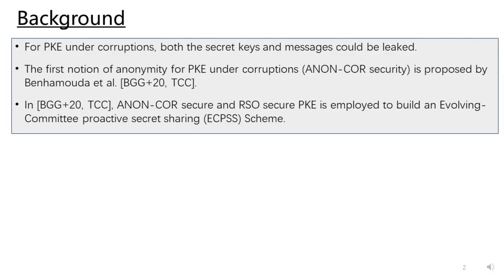Let me introduce some background information. For public key encryption under corruptions, both the secret keys and messages could be leaked. As far as we know, the first notion of anonymity for PKE under corruptions is proposed by Behemulda et al. in 2020. In their work, anonymous CLR-secure and RSO-secure PKE is employed to build an evolving community proactive secret sharing scheme.